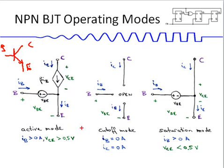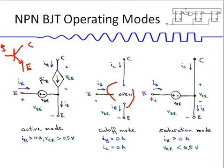The transistor also has a cutoff mode and a saturation mode — those are the digital modes of the transistor. In cutoff mode there is no current flowing at the base and the base-emitter voltage is less than 0.7 volts, so the transistor acts like an open switch. If we put in enough base current to reach 0.7 volts or a little more, the collector-emitter voltage drops to approximately 0.2 volts and the transistor is in saturation, acting like a closed switch.